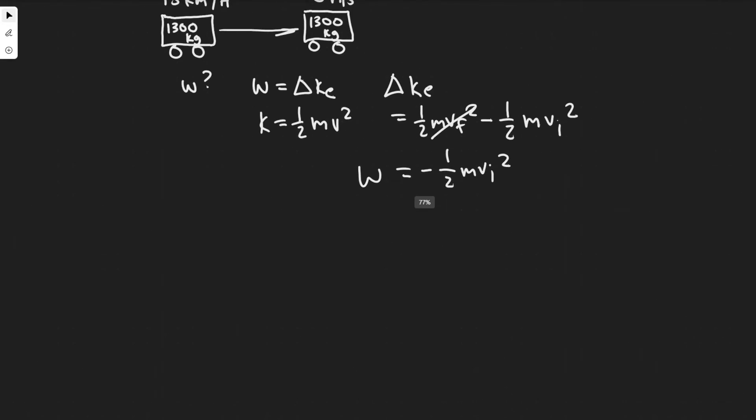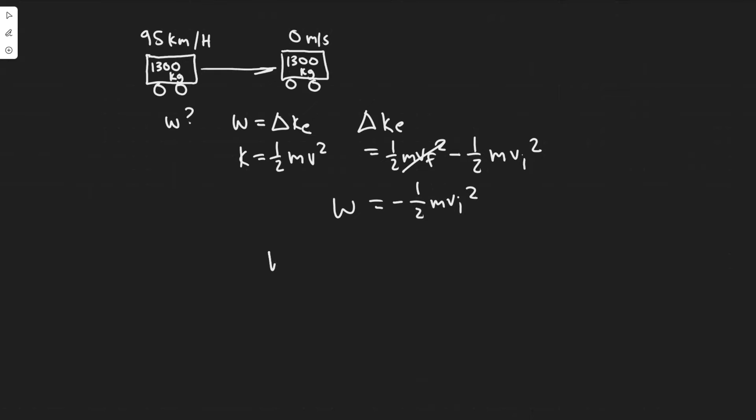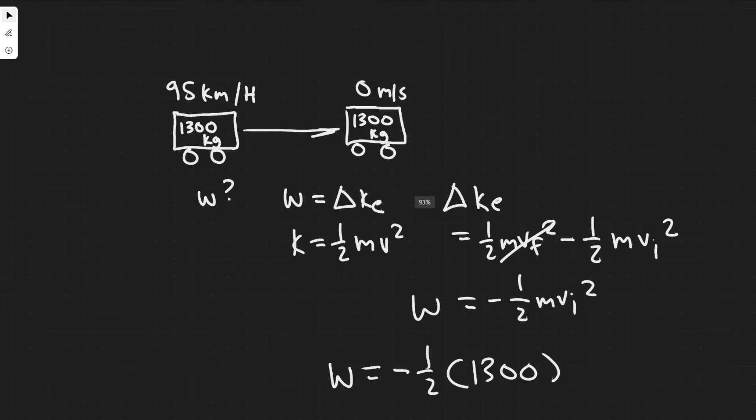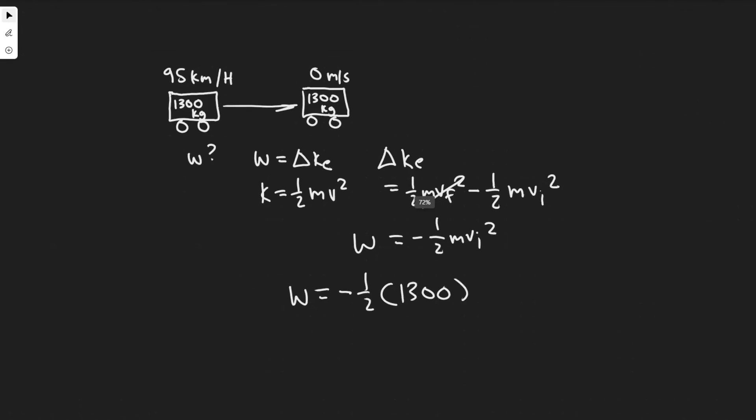What we got to do is just plug in the values now. So work equals minus 1 half times the mass 1300 kg. And then notice we got to convert the units from 95 kilometers per hour to meters per second. We have to make sure it's in the right standard units.